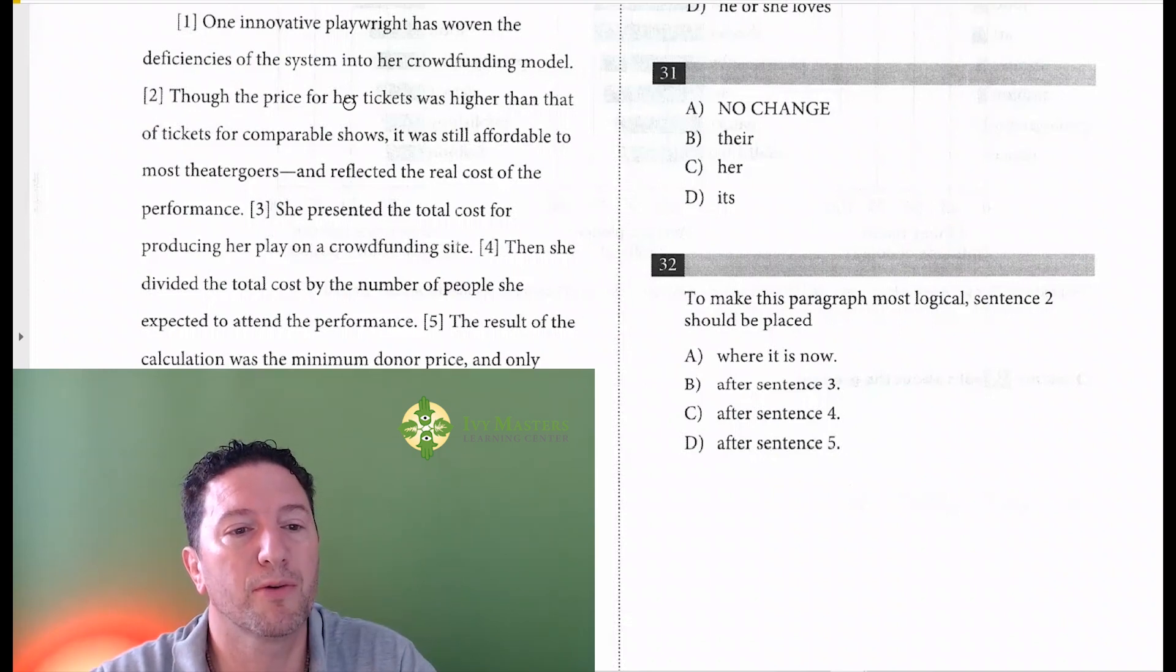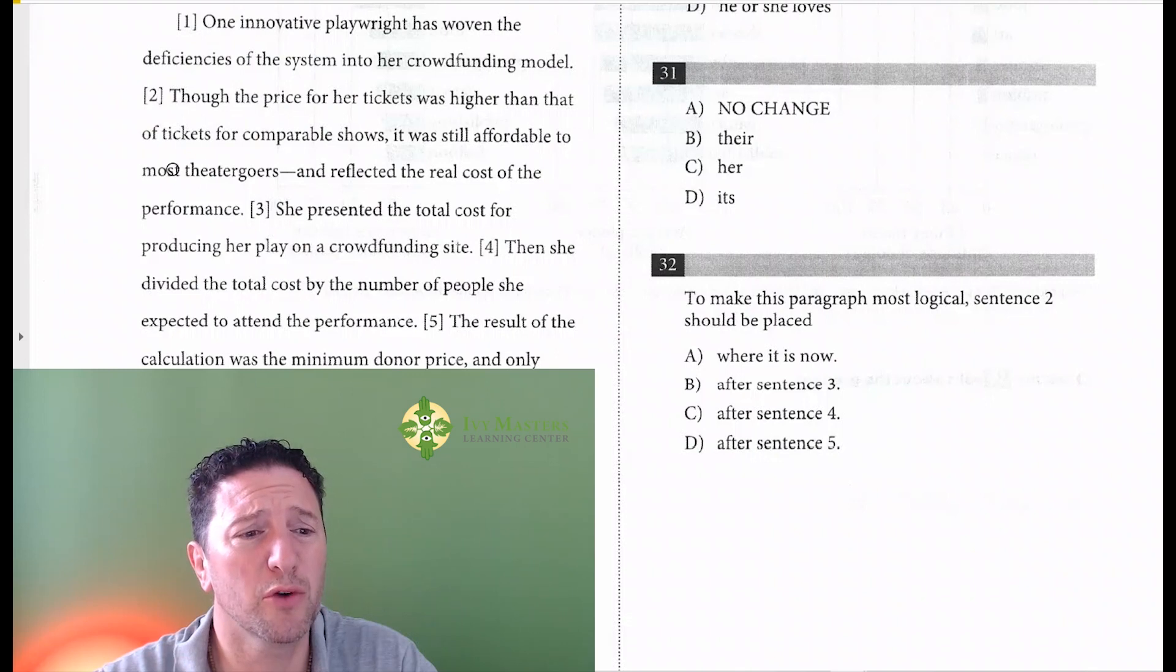Sentence 2 reads: though the price for her tickets was higher than that of tickets for comparable shows, it was still affordable to most theatergoers and reflected the real cost of the performance.